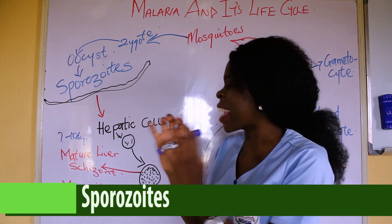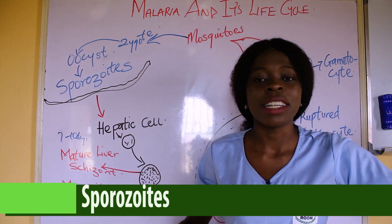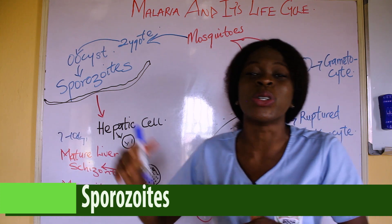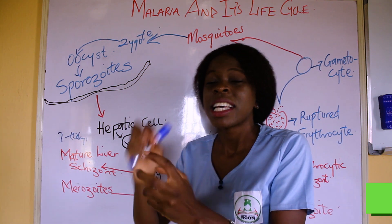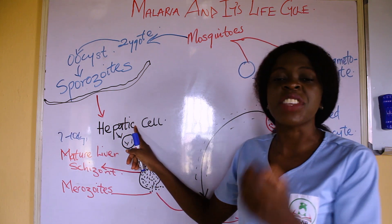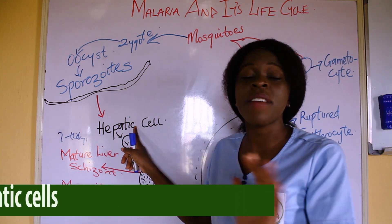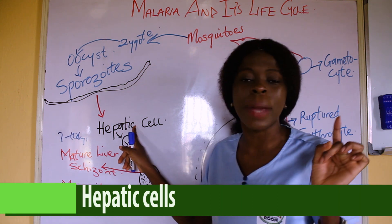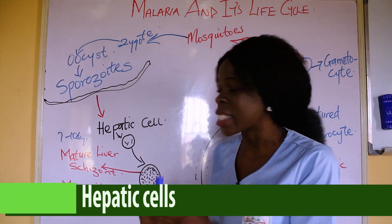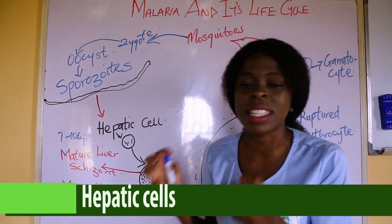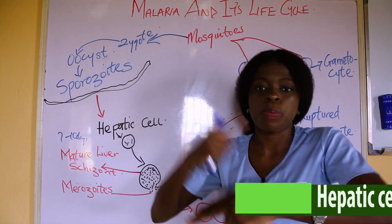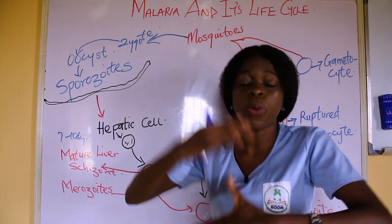When these sporozoites get into the body, they don't go to the digestive system, they don't go to the cardiovascular system, they don't go to the lungs — they go straight to the liver. There you have the hepatic cells, and whenever we hear hepatic, what comes to mind is the liver. So these sporozoites go straight to the hepatic cells, that is the liver, and when they get there, they multiply. The sporozoites multiply by asexual reproduction — they don't need to mate to multiply.